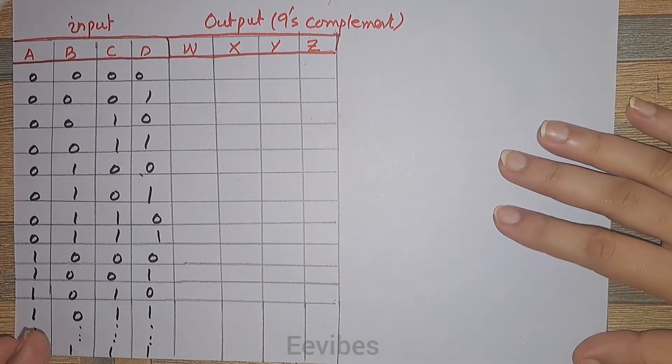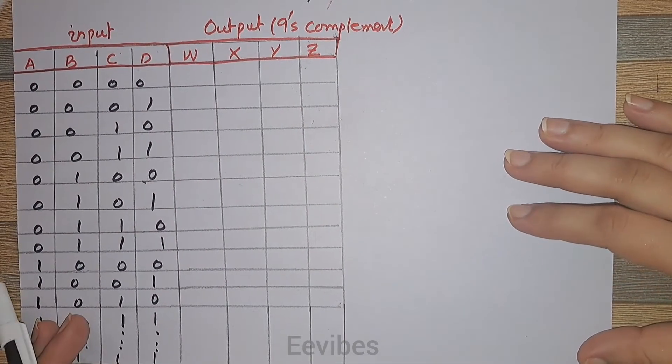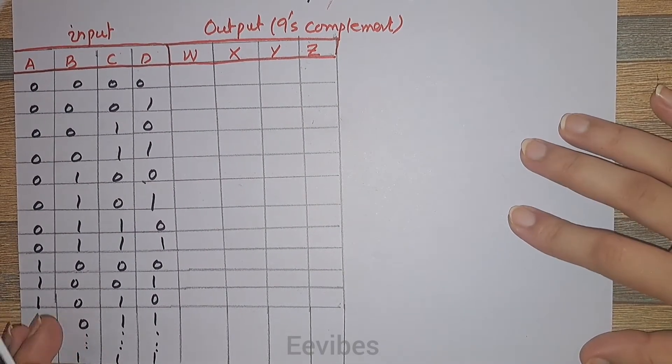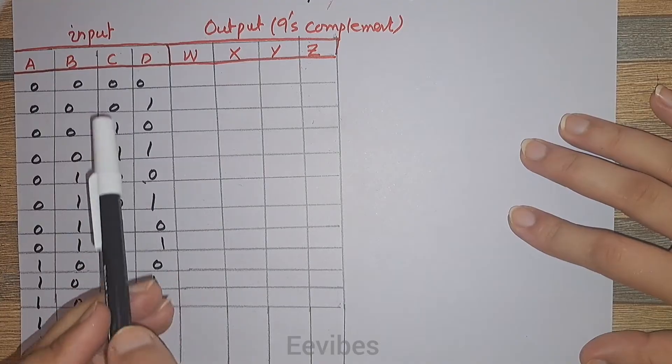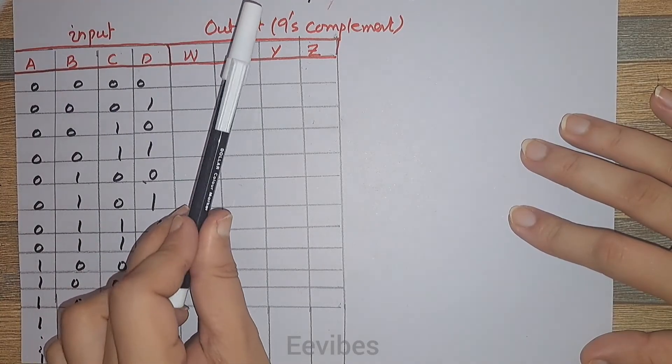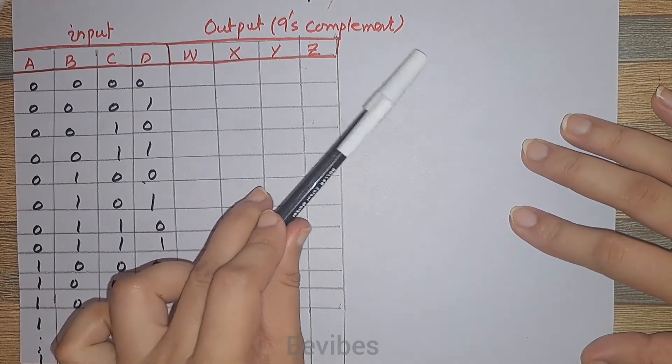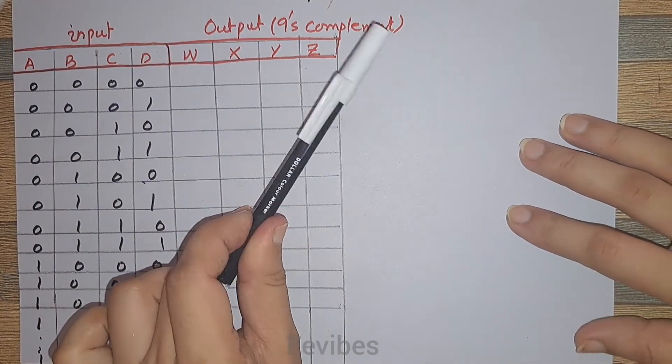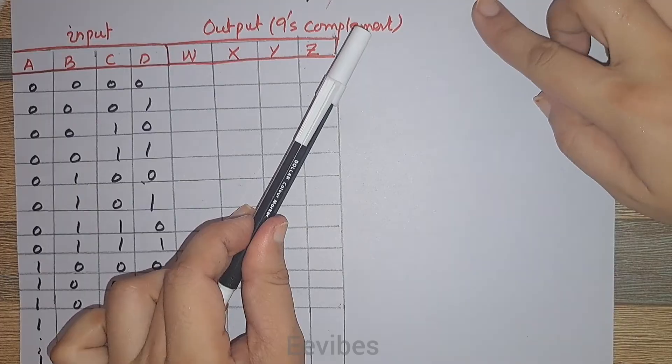Assalamu alaikum, I am Asmaa Mushtaq from EE Vibes, and in this tutorial we are going to design a combinational circuit in which we will be taking the 9's complement of a BCD number.